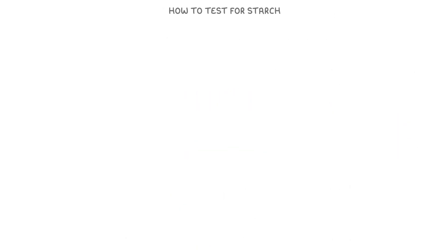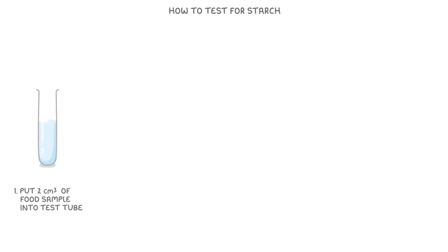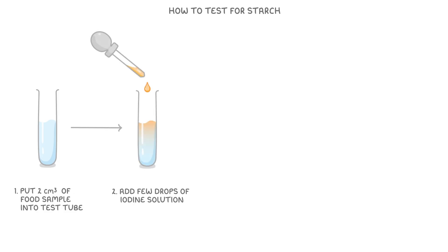Finally, let's look at how to test for starch in a food sample. We put 2 cm³ of the food sample into a test tube, then add a few drops of iodine solution, which is orange in colour, and give it a shake.